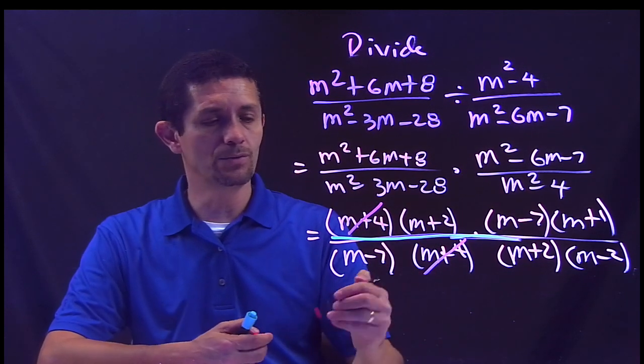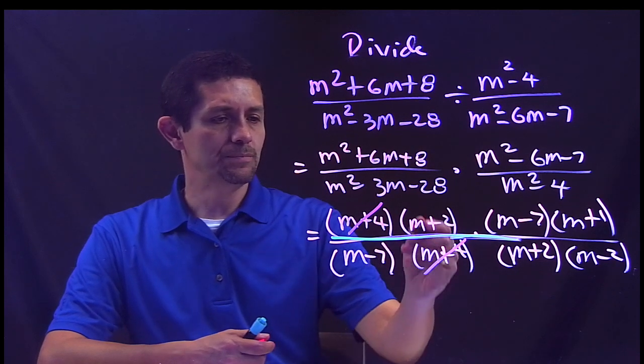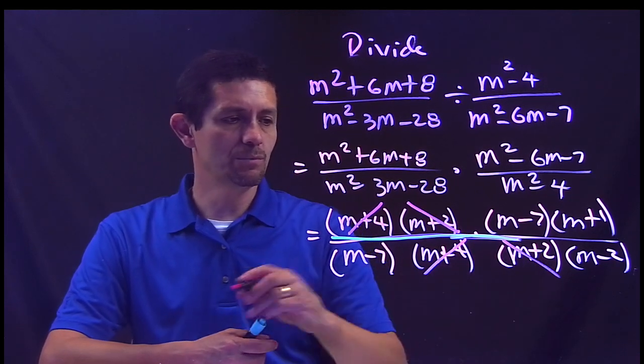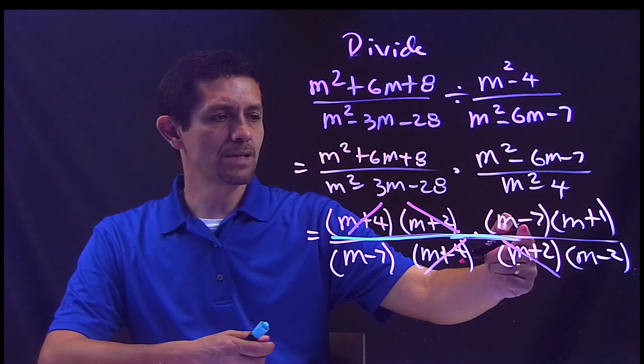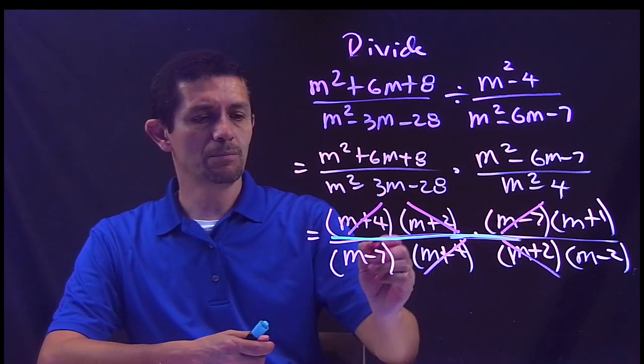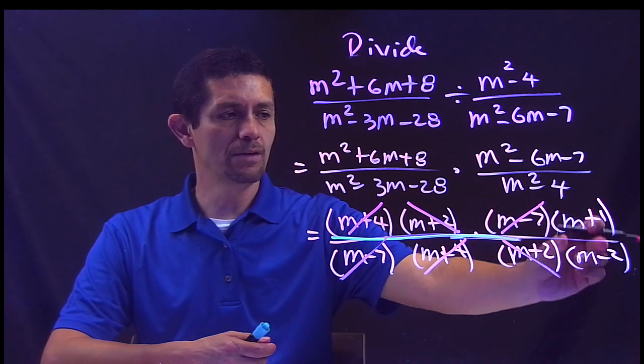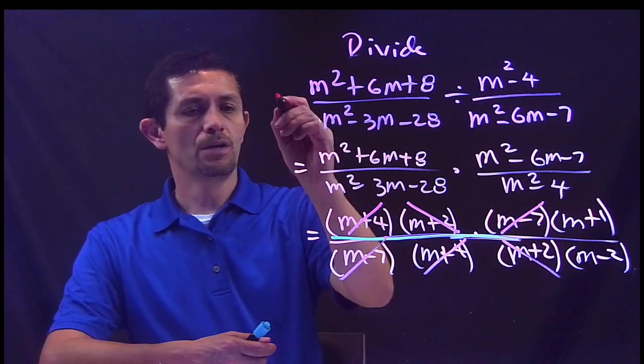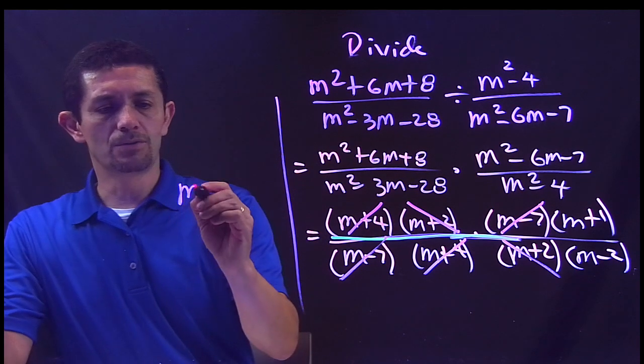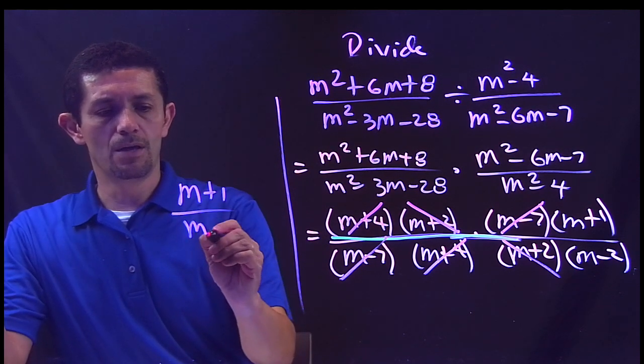M plus 2, M plus 2 from the top, M plus 2 from the bottom. Minus 7, minus 7 from the top, M minus 7 from the bottom. So I cancel all of this and I have left M plus 1 over M minus 2. And that's gonna be your final answer: M plus 1 over M minus 2.